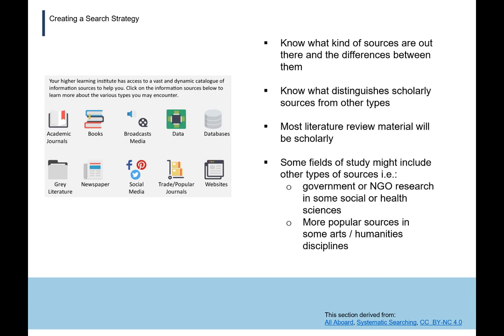Be aware of the different kinds of sources out there and the differences between them. Make sure you understand what scholarly information is and what distinguishes it from other types. Most literature review material will be scholarly, but some fields may include other types — for example, government or NGO research in some social or health sciences, or more popular sources in some arts and humanities disciplines.